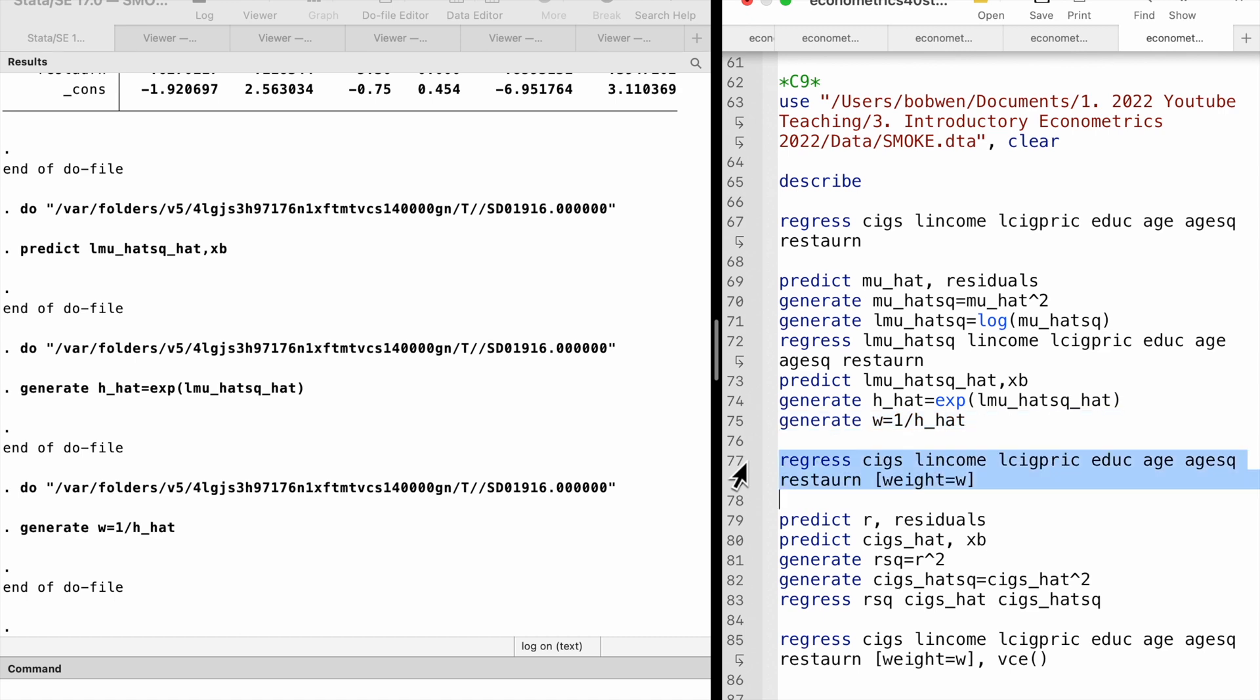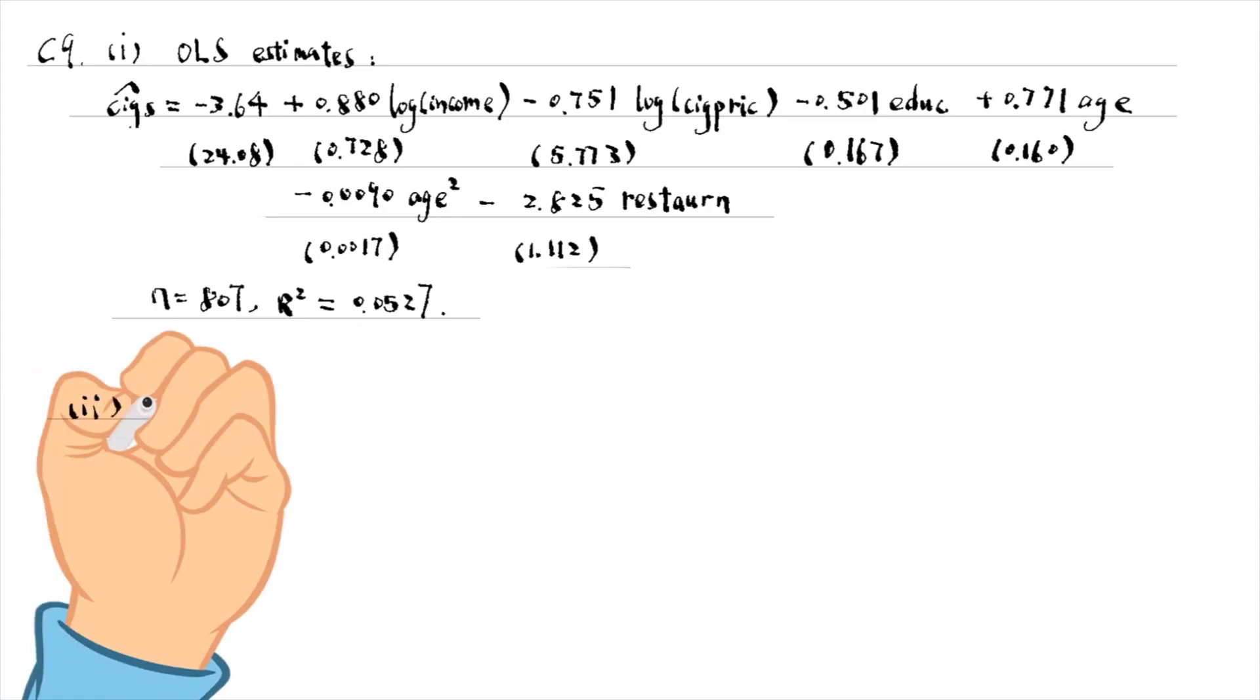In Stata, we put the weight inside a bracket. The estimated equation by weighted least squares is as follows.